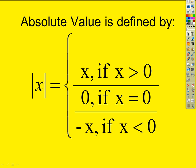Absolute value functions — we know what they do. The absolute value of negative 7 is 7; the absolute value of 7 is 7. Their job is to make sure the output is positive. If the input is positive, they don't do anything. If the input is negative, they make it positive by multiplying by negative one. So this is really just a piecewise function.